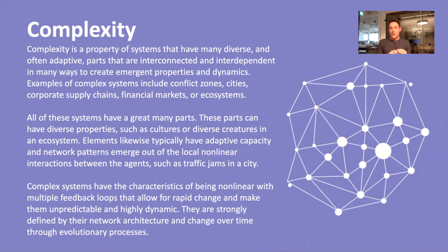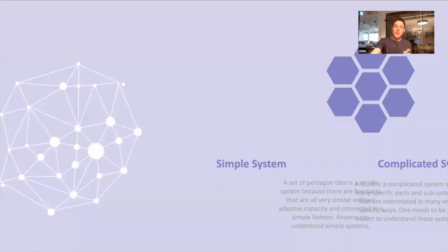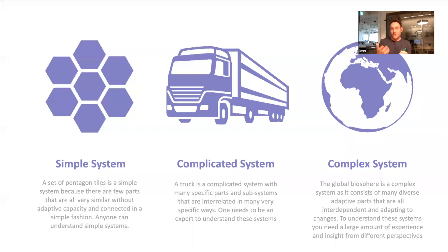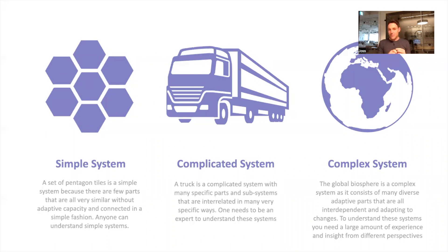We'll look at all those aspects in different cards as we go through — that's just to give you an idea of what we mean by complexity. There are different types of systems. Simple systems have few elements, no real diversity, no interdependency or interconnectivity, no emergence, and limited dynamics — relatively simple to understand. Complicated systems have many parts, many ways of interconnecting them, many subsystems, and one needs to be an expert to understand them, like a lorry or an airplane.